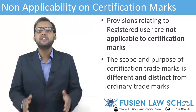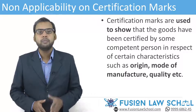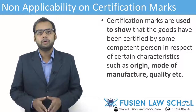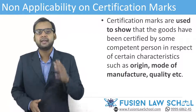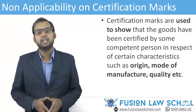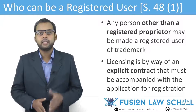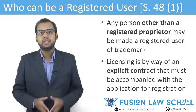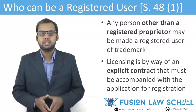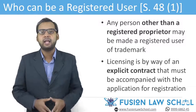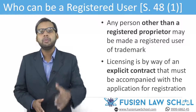Since the scope and purpose of certification trademarks is different and distinct from ordinary trademarks, the provisions concerning registration of registered users are not applicable to certification trademarks, whose main purpose is to show that the goods have been certified by some competent person in respect of certain characteristics such as origin, mode of manufacture, and quality. Section 48 of the Trademarks Act provides that any person other than a registered proprietor may be registered as a registered user in respect of all or any goods or services for which the trademark is registered. This licensing is usually by way of an explicit contract that must be accompanied with the application for registration, disclosing terms as to royalty and means for bringing permitted use to an end.